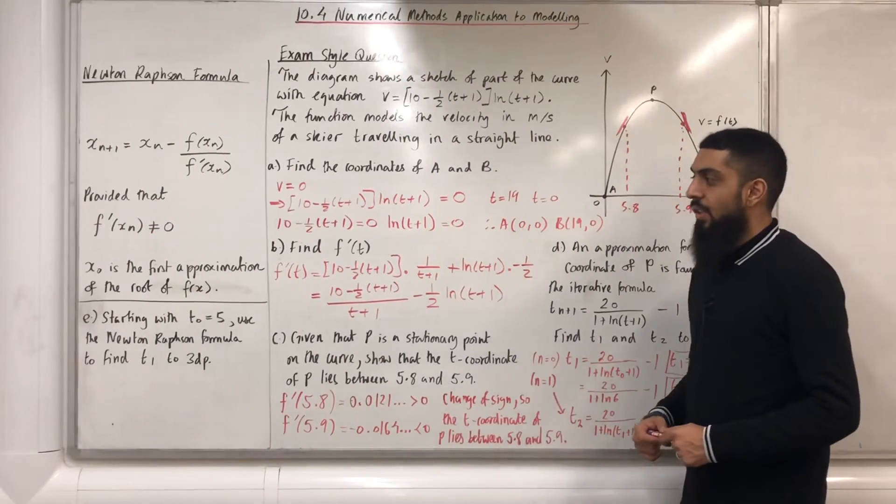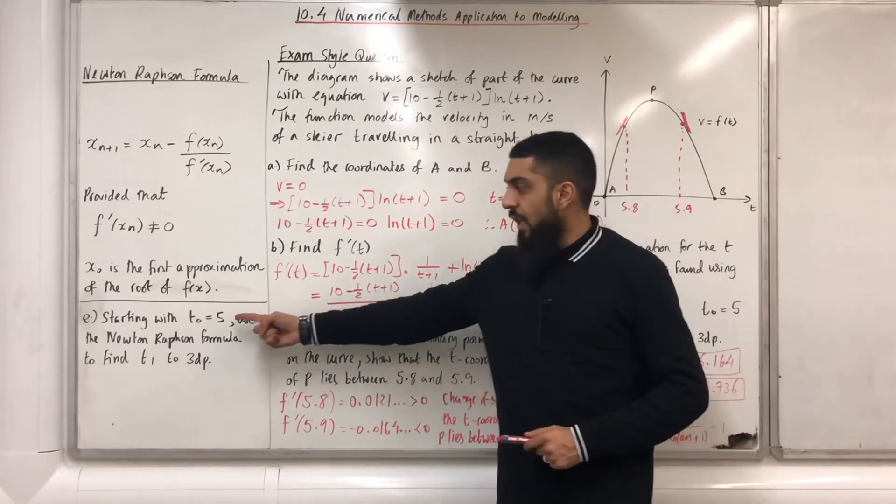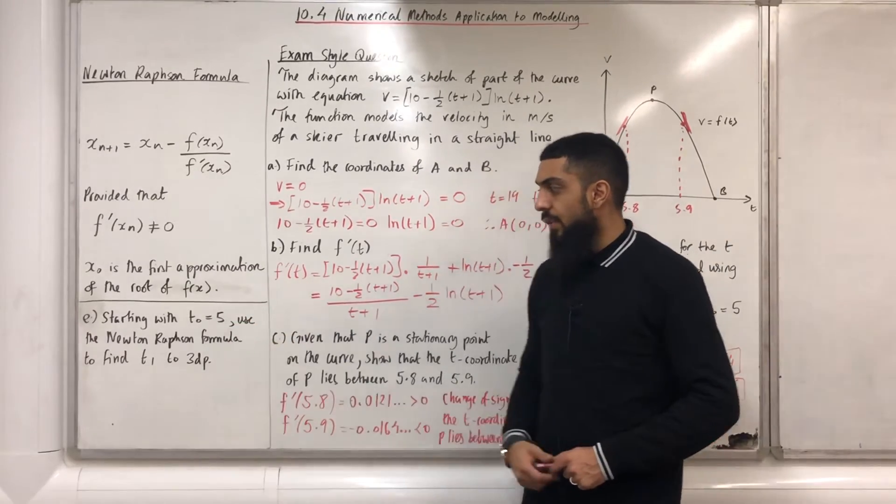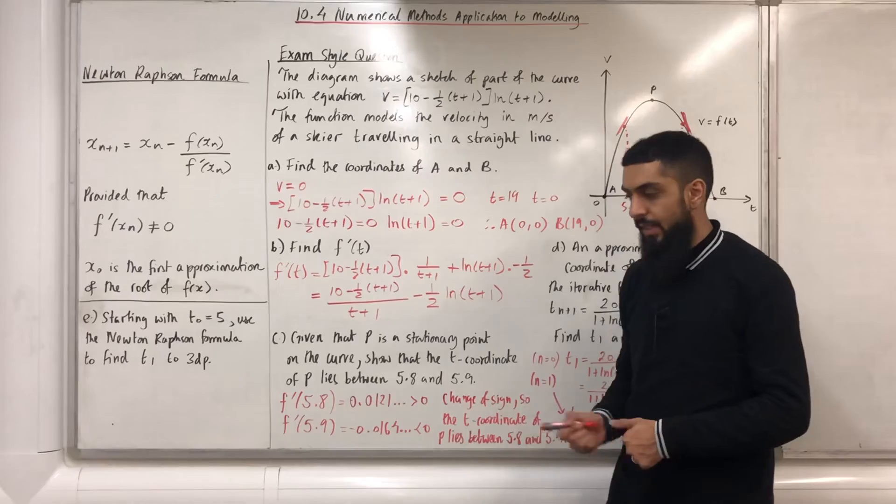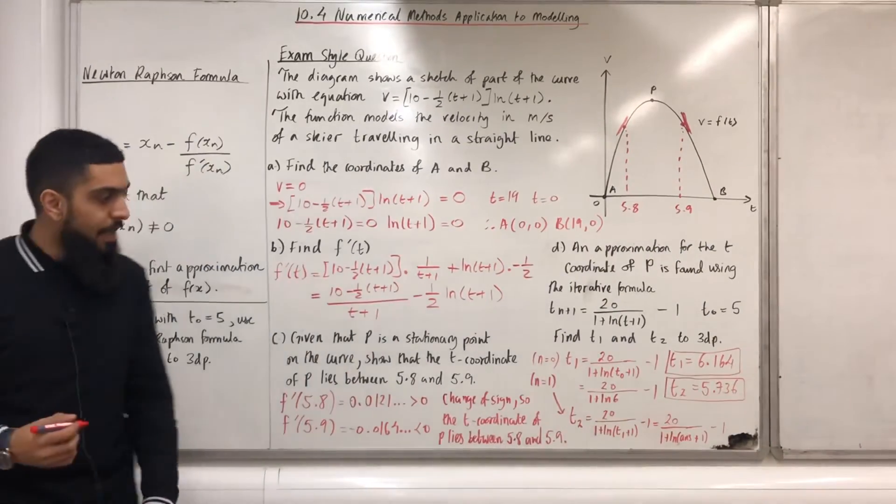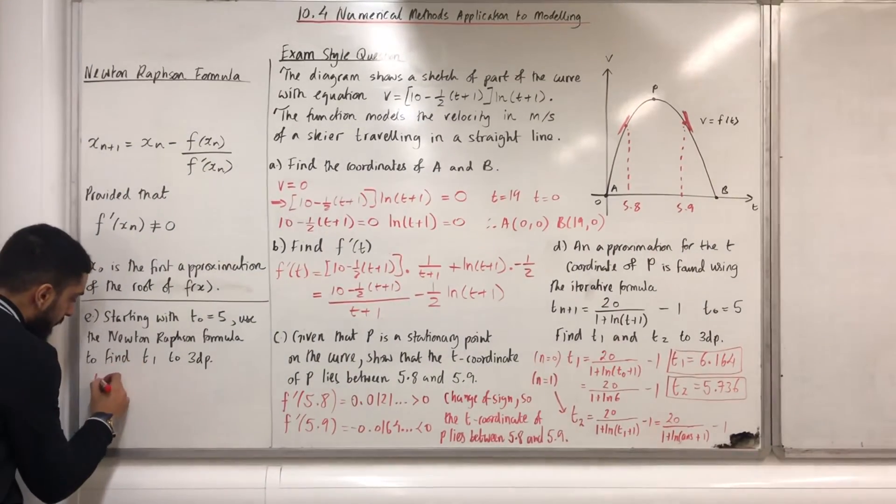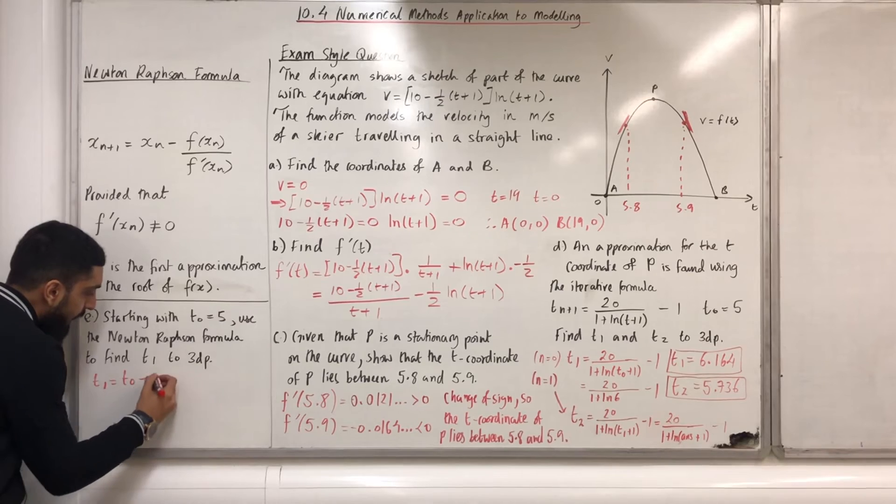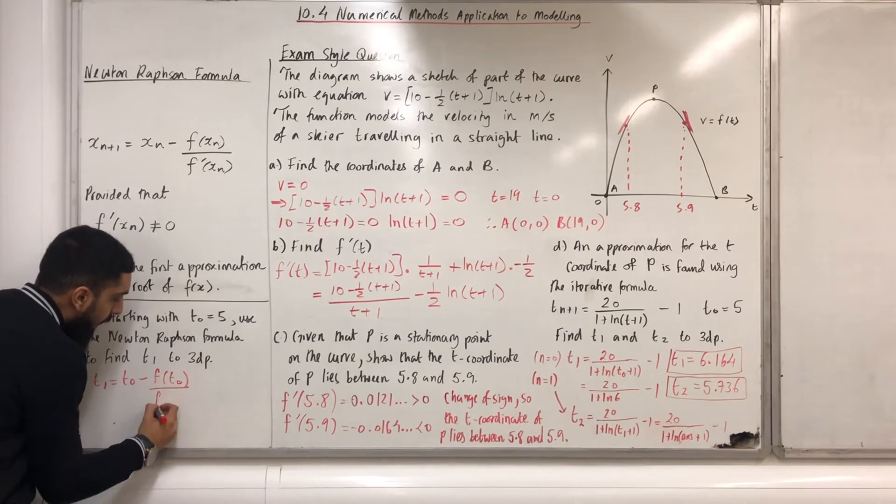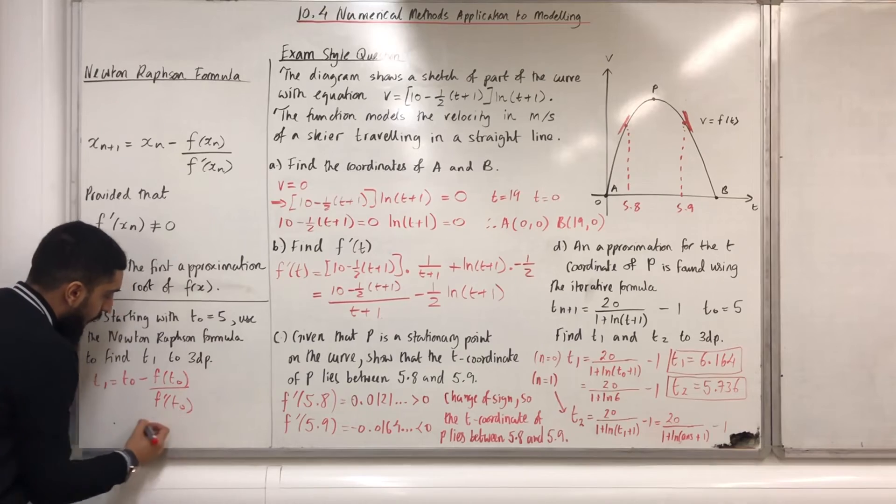Moving on to part E. Starting with t_0 = 5, use the Newton-Raphson formula to find t_1 to three decimal places. Okay, t_1 = t_0 - f(t_0)/f'(t_0).